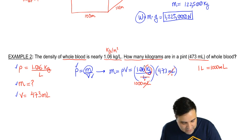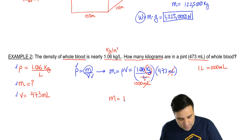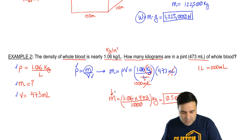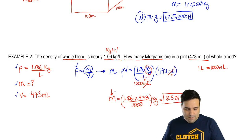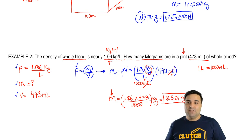Milliliters will cancel. And then you're left with kilograms, which is what you want. So all we've got to do here is multiply this big mess. And if you do that, you get 1.06 times 473 divided by 1,000. And this is going to be in kilograms. And if you do this in the calculator, you get 0.501 kilograms. That's how many kilograms or how much the mass of whole blood, if you have one pint of it with this density. That's it for this one. Let's go to the next one.